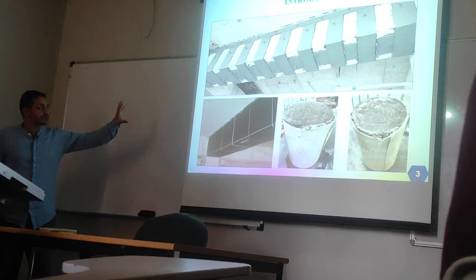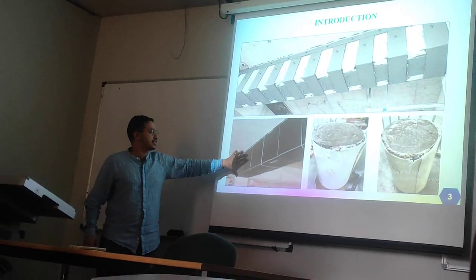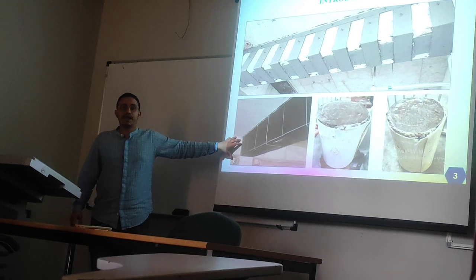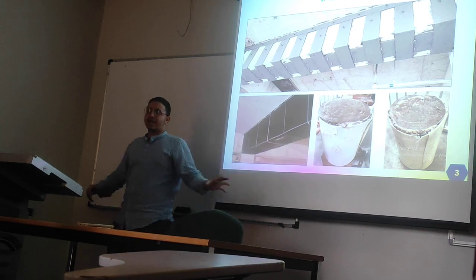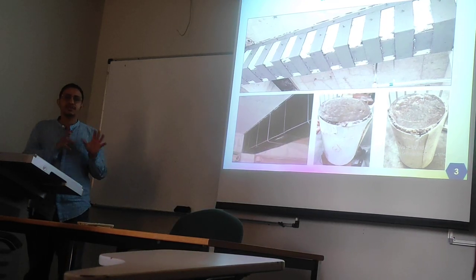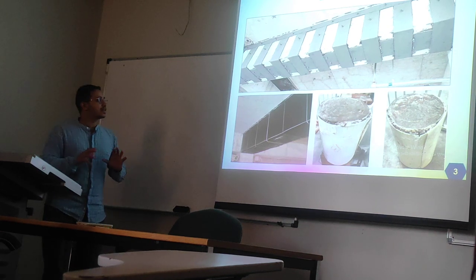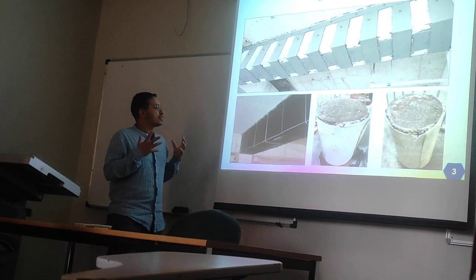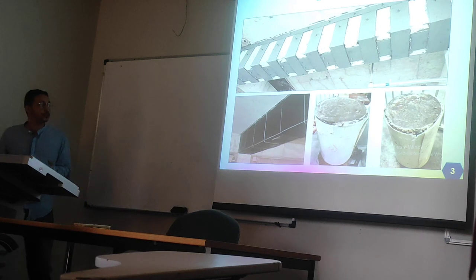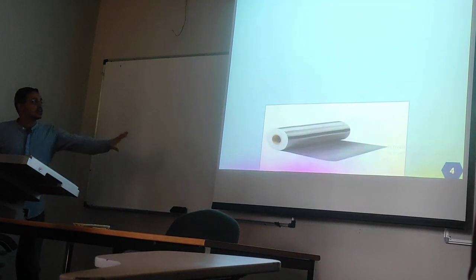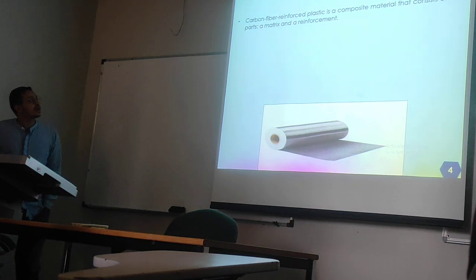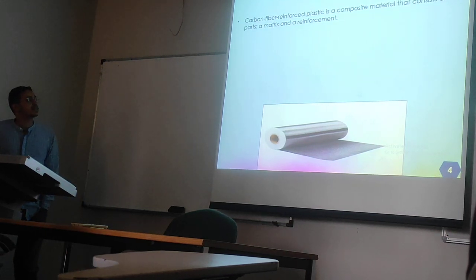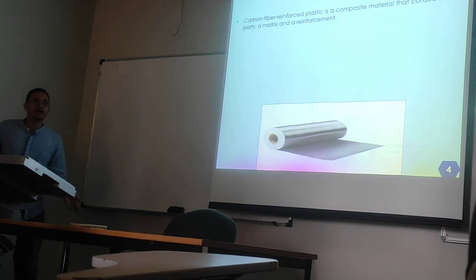So what is CFRP? Here you can see this is the CFRP — the black sheets — here the blade bonding, and here is the GFRP. They will focus on CFRP and blade bonding because they are very common and popular in use. First, CFRP is carbon fiber reinforced plastic, which is a composite material that consists of two parts: a matrix and a reinforcement.